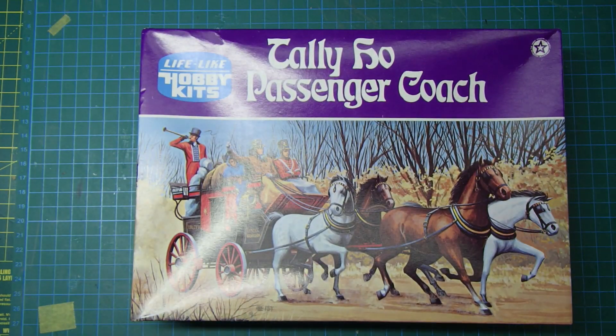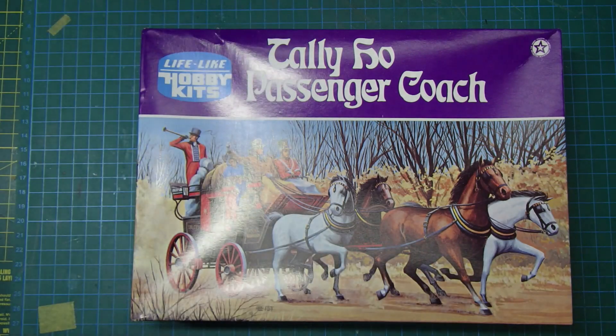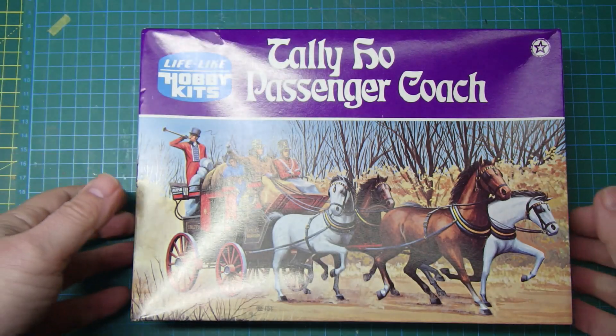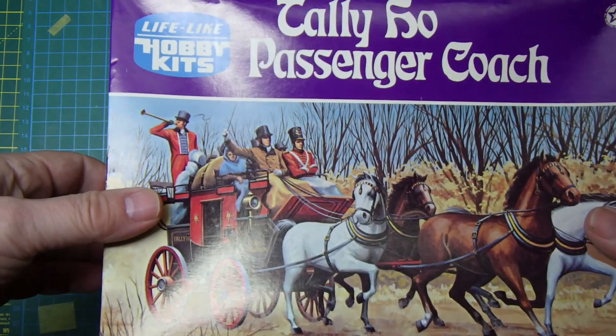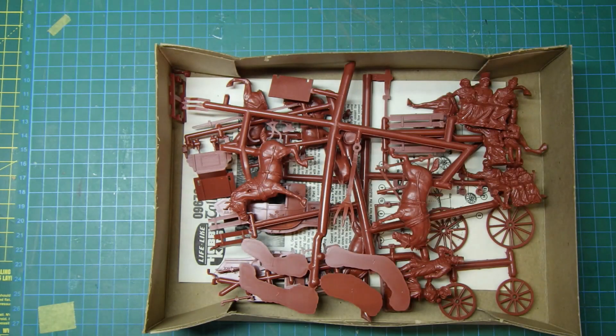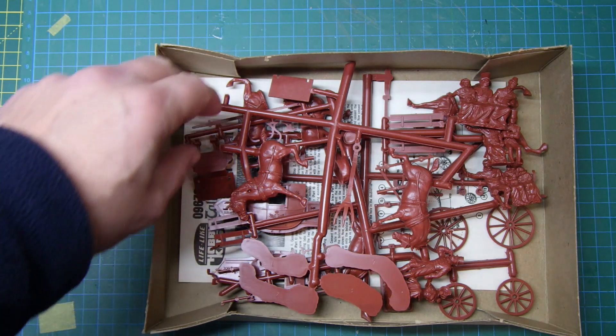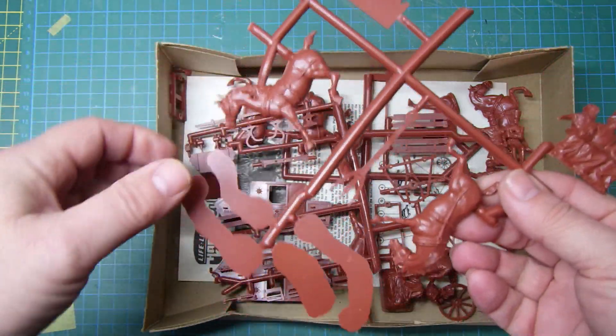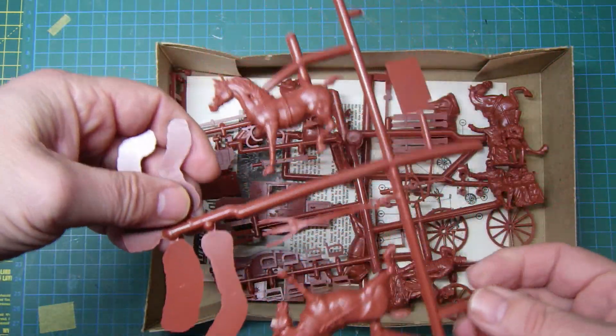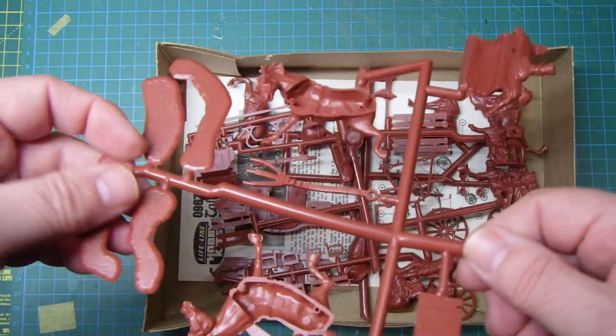Tally-ho passenger coach. If I remember rightly when I looked, the tooling is from the 1960s I think. Let's get the lid off and have a look. Well, not surprised it's obviously old tooling. You can tell by the fact that it's these old sort of trees as it were.